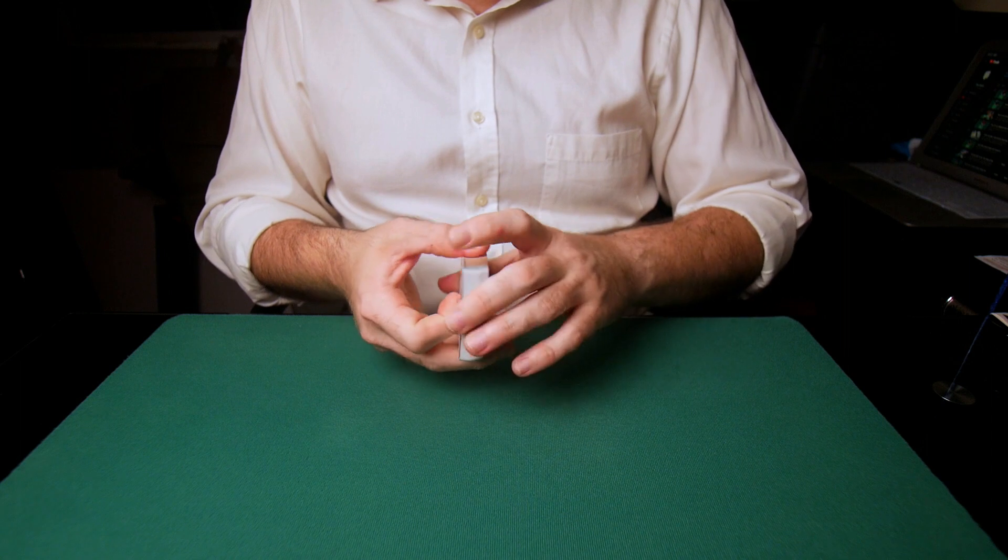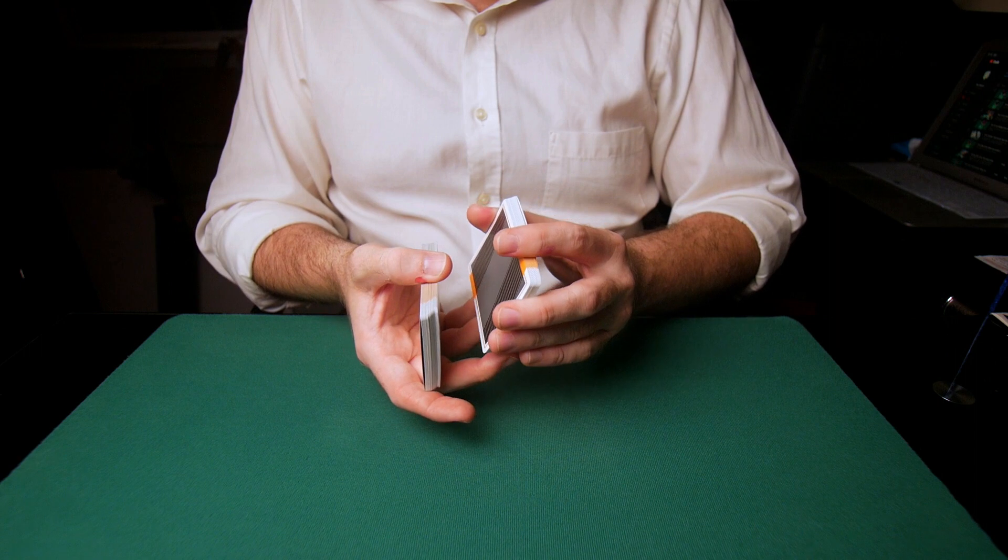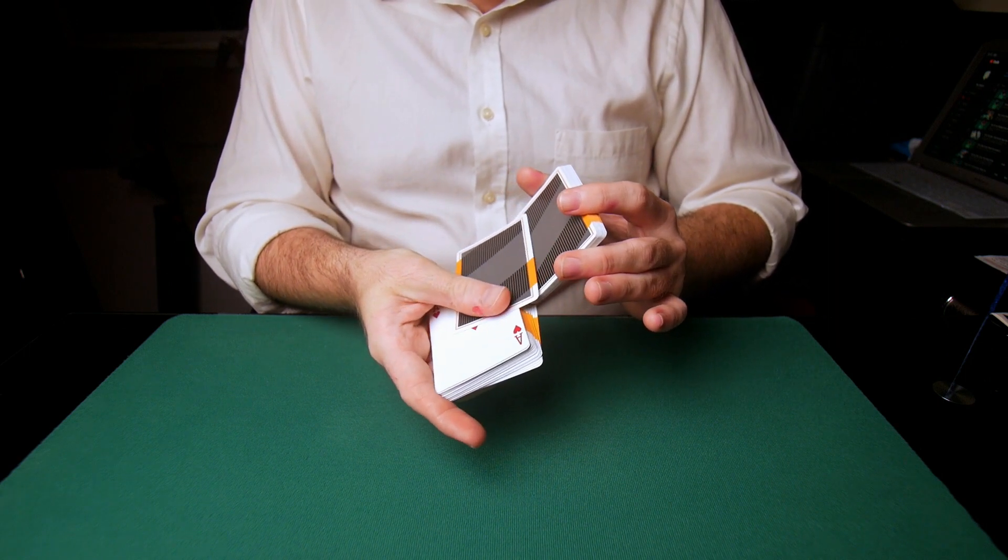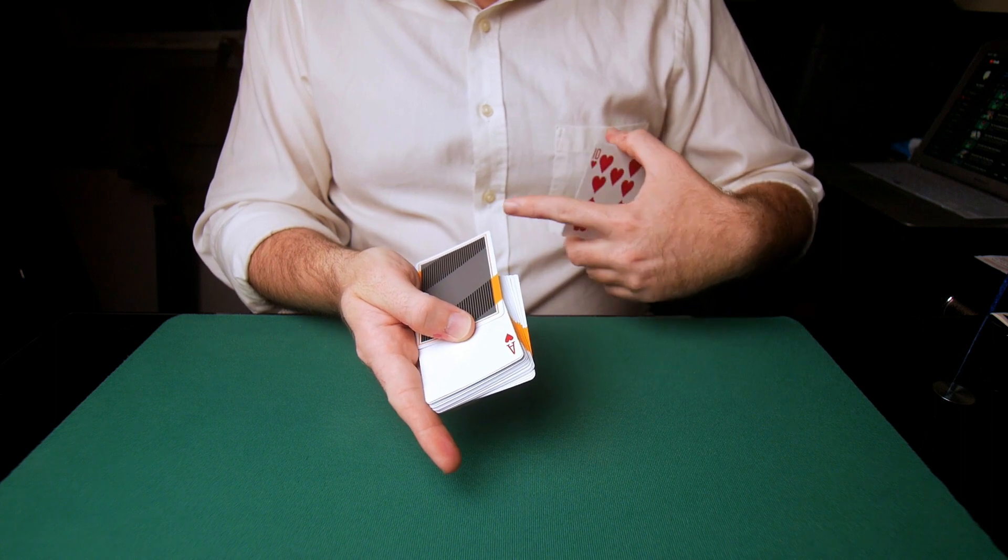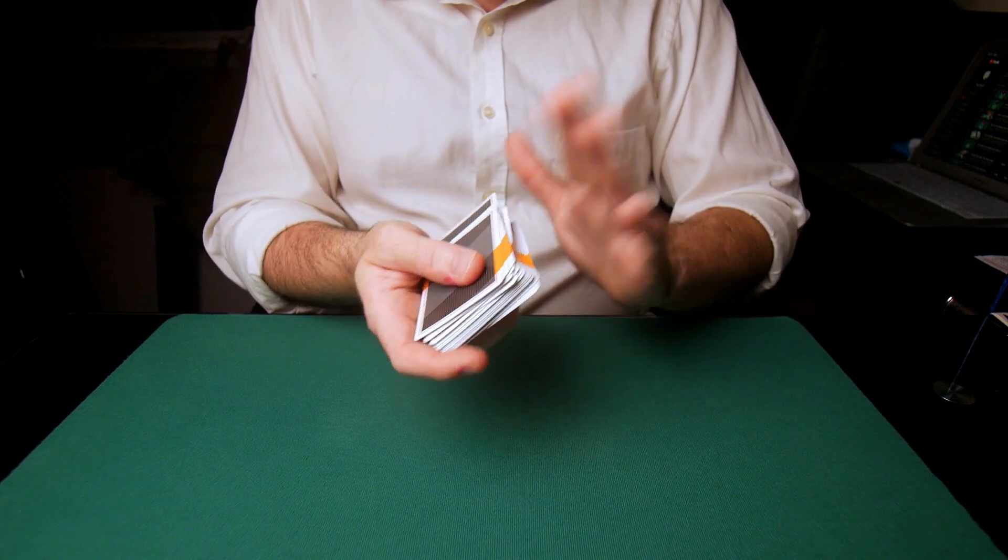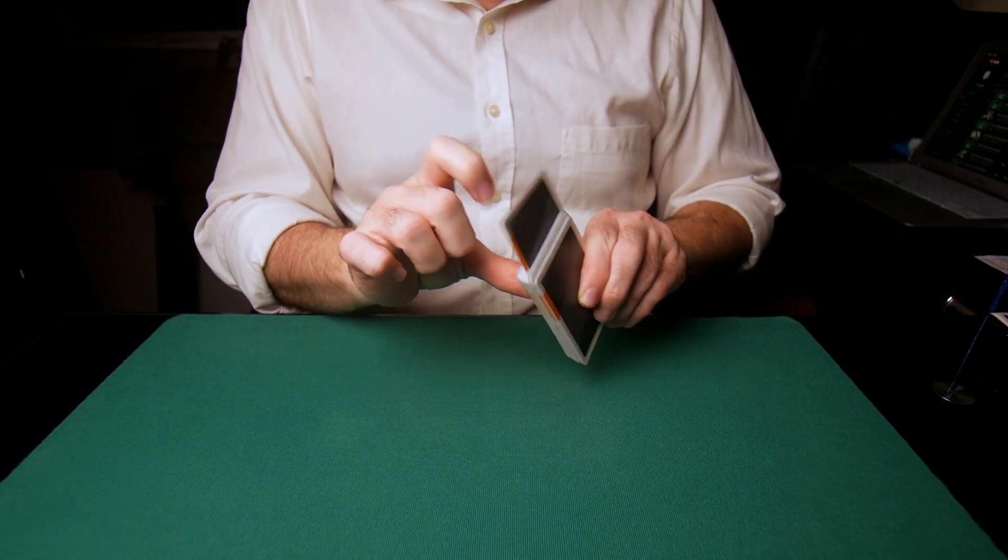One more time, I'll put the ace face up. And all you're going to do is simply take a chunk from the bottom, run that first card in jogged, and shuffle off. Right now, you are left with this. This is the jog.